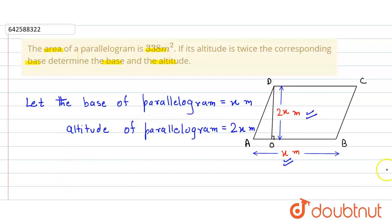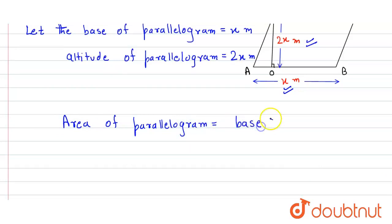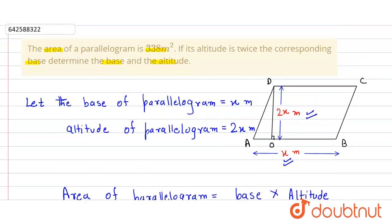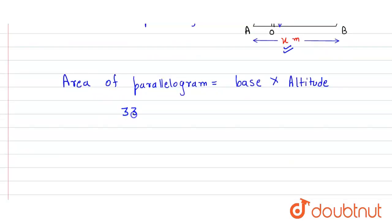Now we use the formula for the area of the parallelogram, which is: Area = base × altitude. The area of the parallelogram is given to be 338 square meters, so we get 338 = x × 2x.